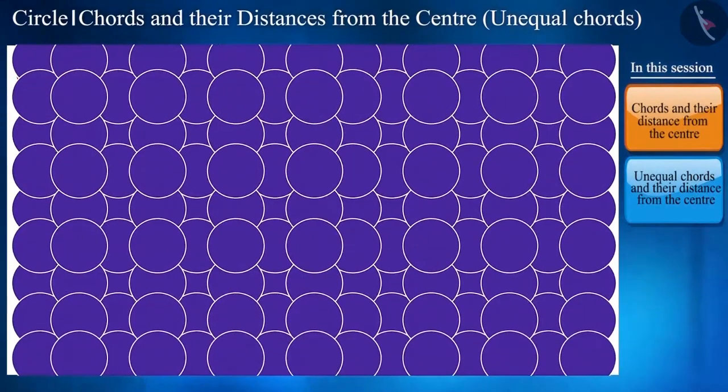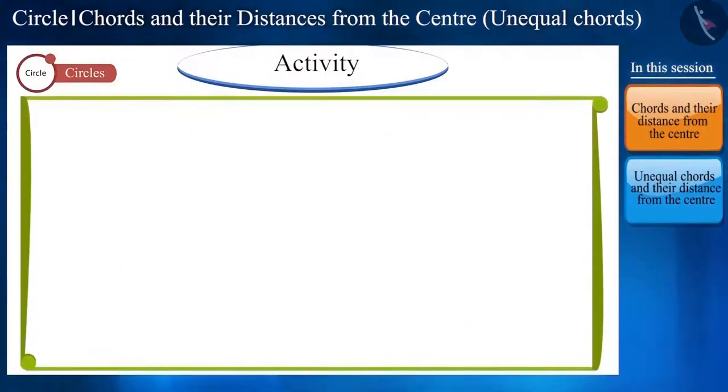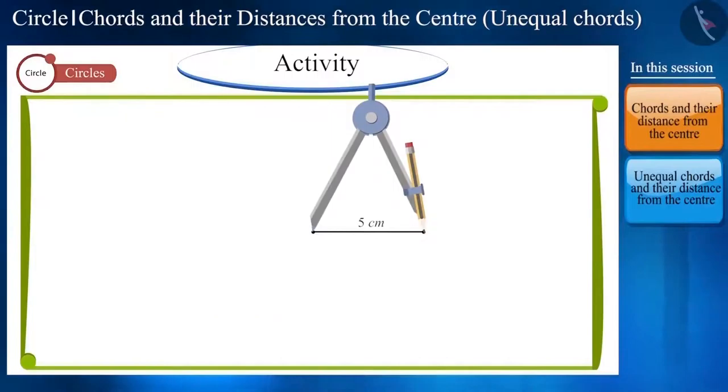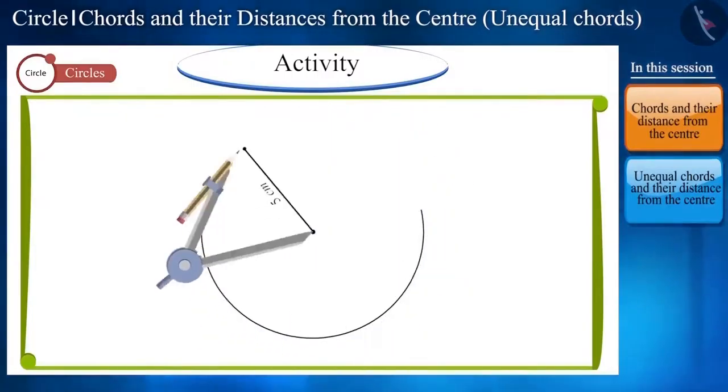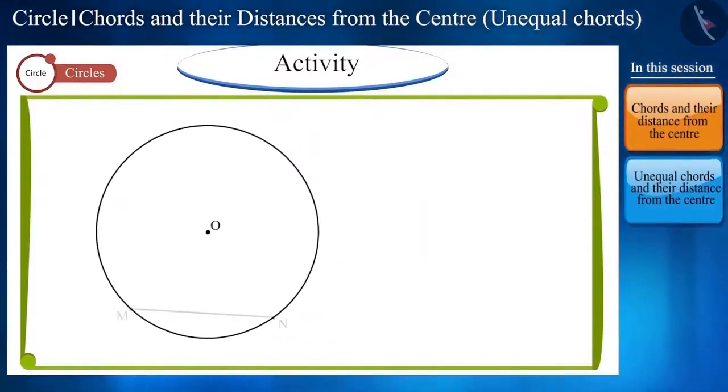Let's understand this process through an activity. Draw a circle with radius 5 cm whose center is O and draw two chords MN and SP whose lengths are 6 cm and 8 cm respectively. Here, we have taken two unequal chords.